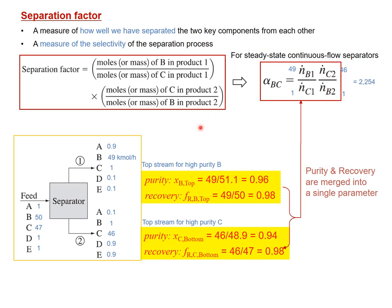Now we have three measures of separator performance: purity, recovery, and separation factor. The separation factor can also be described using purity or recovery. Using flow rates (N), molar composition (X, sometimes called purity), or fractional recovery (FR), the equation structure remains the same: B to C in stream 1 and C to B in stream 2.